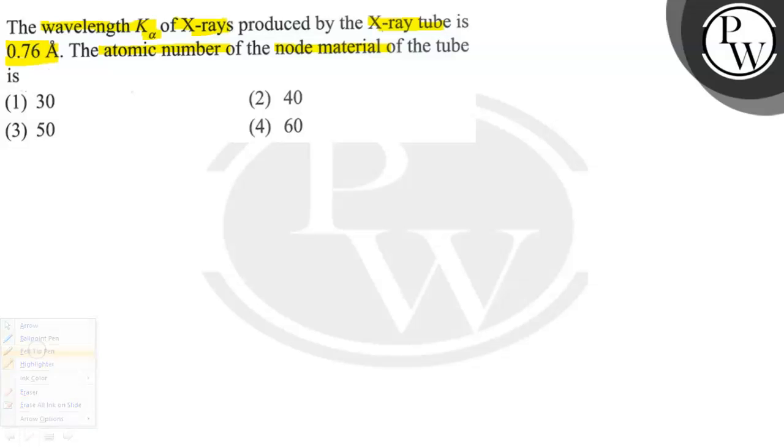So in the question we're told that X-rays with K-alpha wavelength are being produced and its value is 0.76 angstrom. We have to find the atomic number of the anode material of the tube - which material is being used.